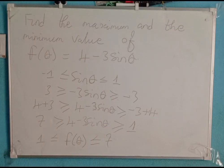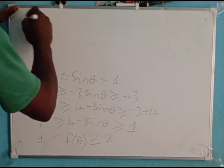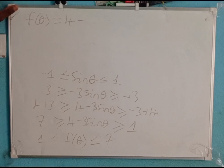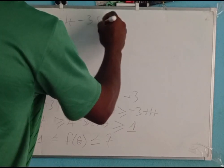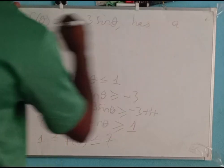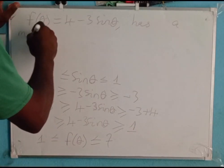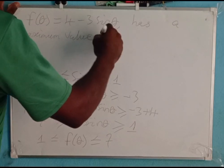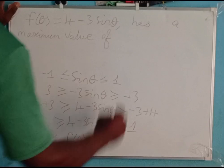Let's conclude. The function f of theta equal to 4 minus 3 sine theta has a minimum value of 1 and a maximum value of 7.